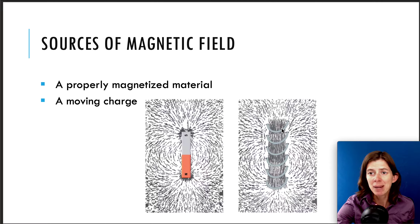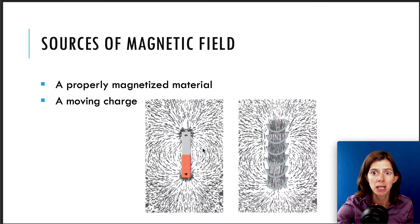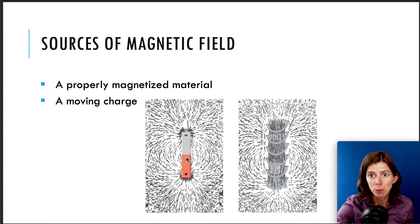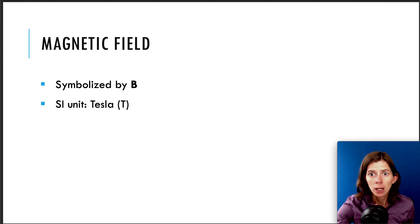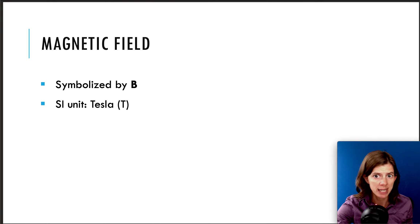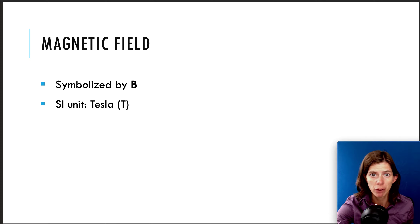So basically, the source of all magnetic fields is moving charges, because the magnetic materials within the atoms themselves are moving charges as well. The magnetic field uses the letter B, and it is a vector — it does have a direction. The unit for the magnetic field is a Tesla; we use the letter T for the unit.